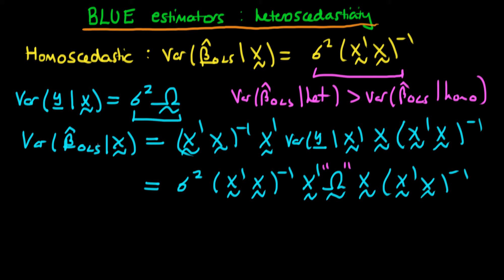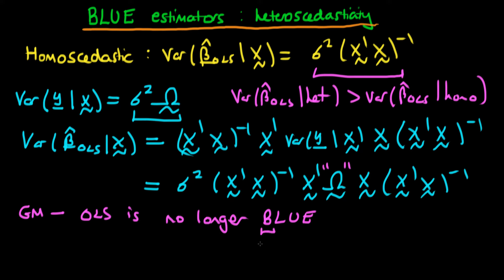So that's the variance of beta hat OLS. But we know from the Gauss-Markov conditions that in the presence of heteroscedasticity, OLS is no longer BLUE — it is no longer the best linear unbiased estimator. There are other estimators which are better, meaning they have a lower variance. In the next few videos we're going to derive these estimators by applying a linear transformation to our model and then estimating OLS on that transformed model, which should have homoscedastic errors.